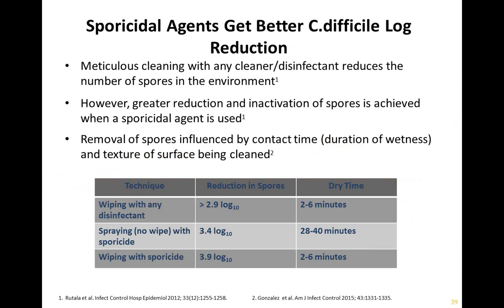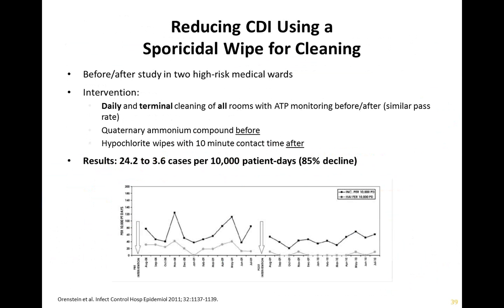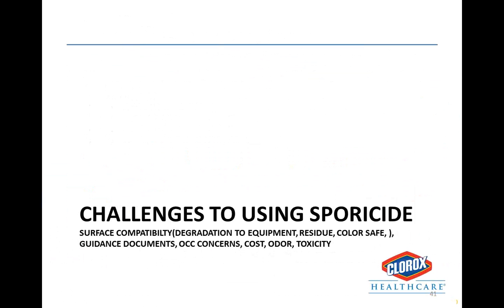This work is from 2015, and it's worth noting that when guidance documents framing our current practice were created, some of this information didn't yet exist. A study published by Orenstein looked at a before-and-after study at two high-risk medical wards, changing from quaternary ammonium compound to hypochlorite wipes for daily and terminal cleaning of all rooms. What they noticed was a decline from 24.2 to 3.6 cases per 10,000 patient days — an 85% decline. So it seems like this stuff works.